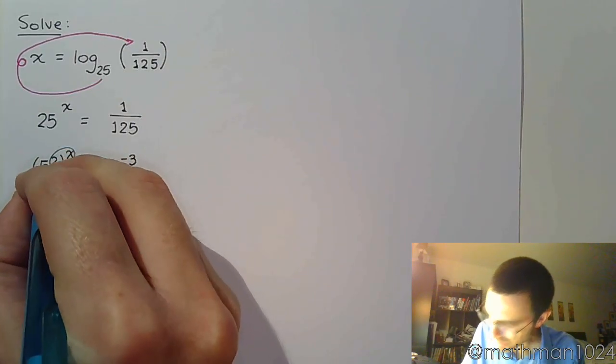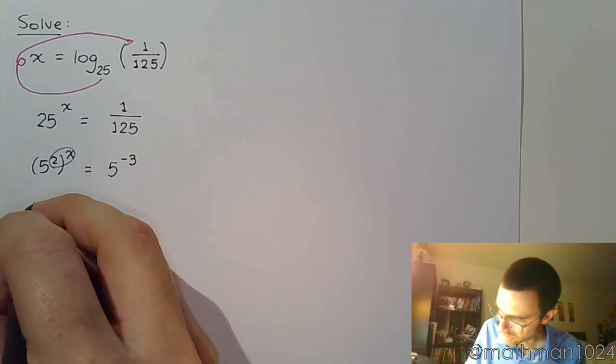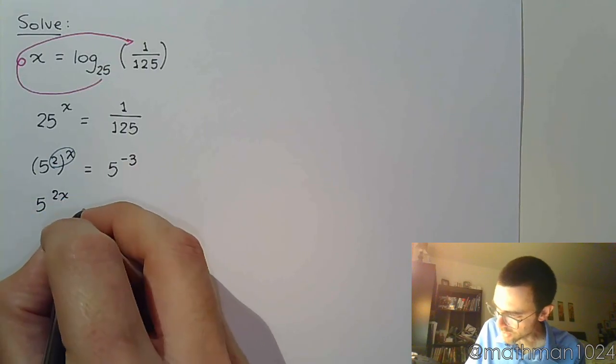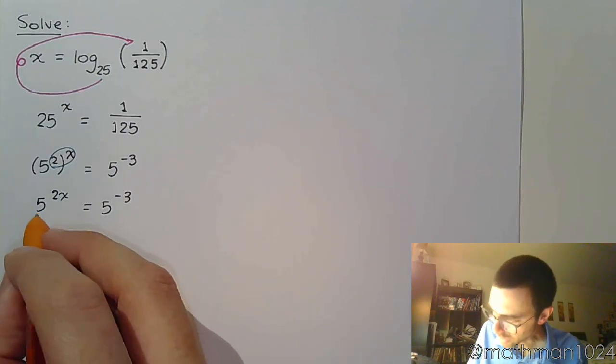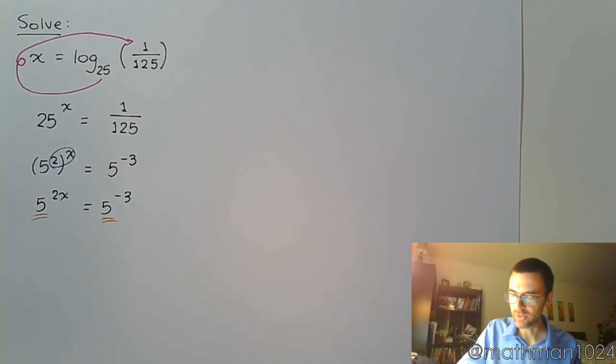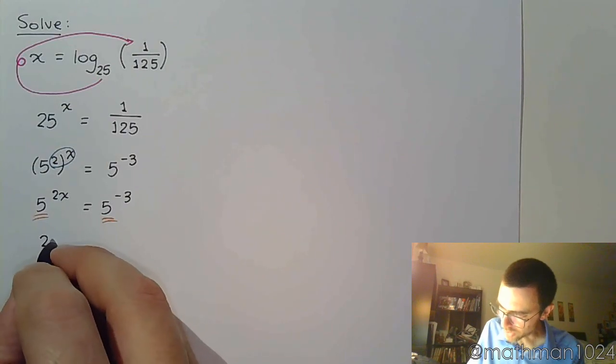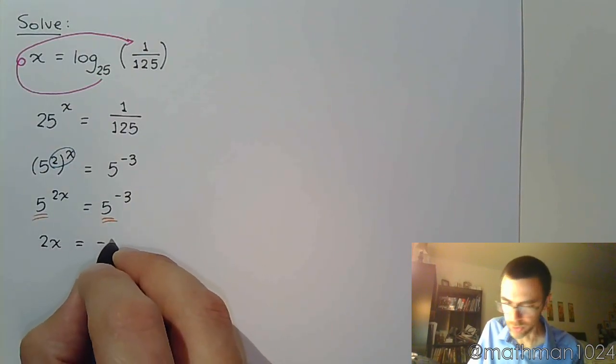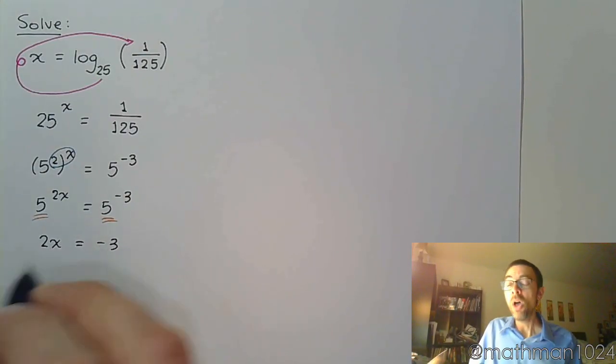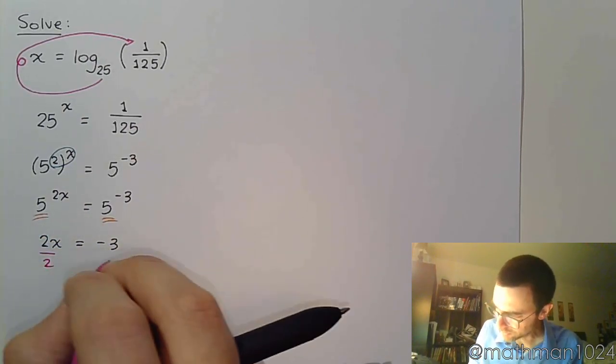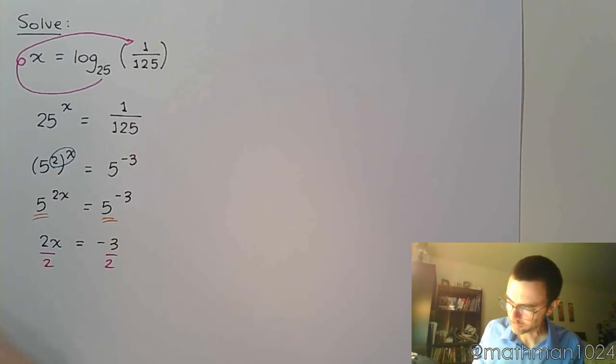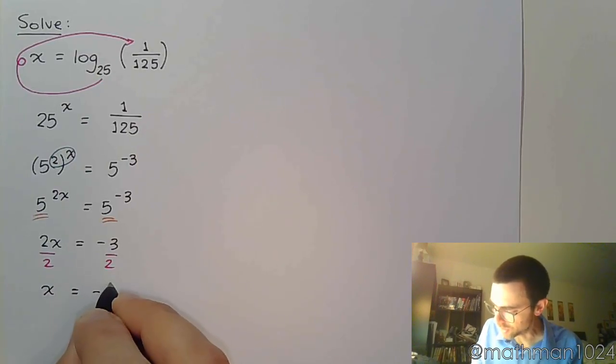So here we have power to power. 5 to the 2x equals 5 to the negative 3. Since these guys have the same base, we can set these powers equal to each other. Then we finish solving this by dividing both sides by 2, and x equals negative 3 halves.